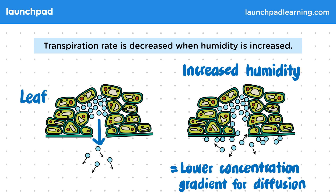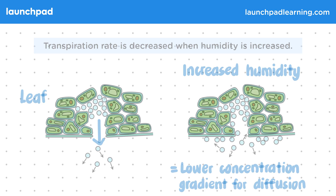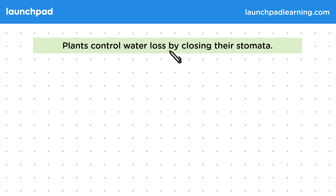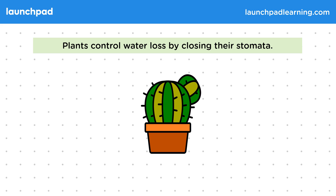This means there's less evaporation and a lower rate of transpiration, and you should be able to explain this in the exam. Plants control water loss by closing their stomata. In addition to describing the role of stomata and guard cells in regard to controlling water loss, you need to be able to discuss adaptations that enable organisms to survive in the conditions that they live in.